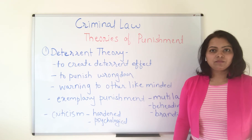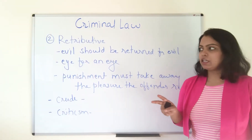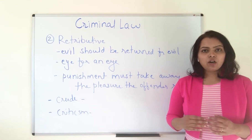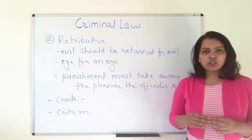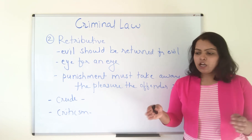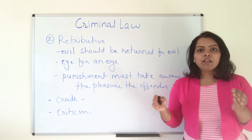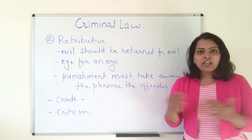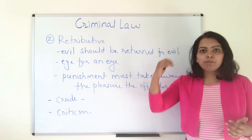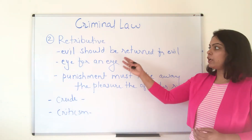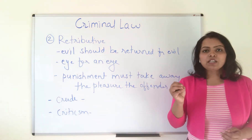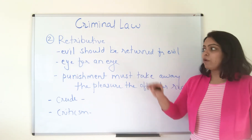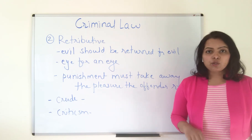The second theory of punishment is retributive theory. Retributive theory tries to maintain a mechanical proportion between a crime and its punishment — so if you commit a crime, the same punishment will be given to you. It's a mechanical connection between crime and punishment. Evil should be returned for evil: if a person commits a crime, the same type of crime will be committed against that person. This theory arose because earlier blood feuds were common.